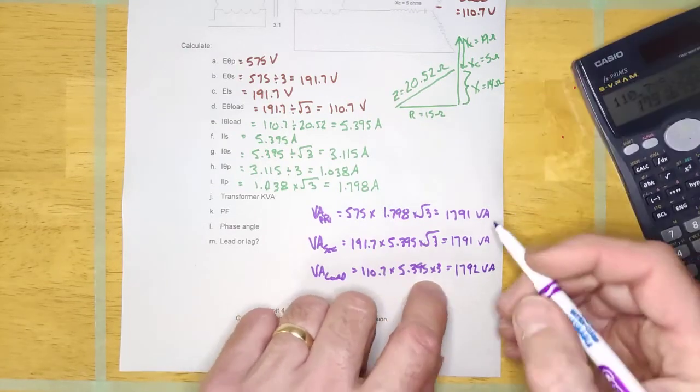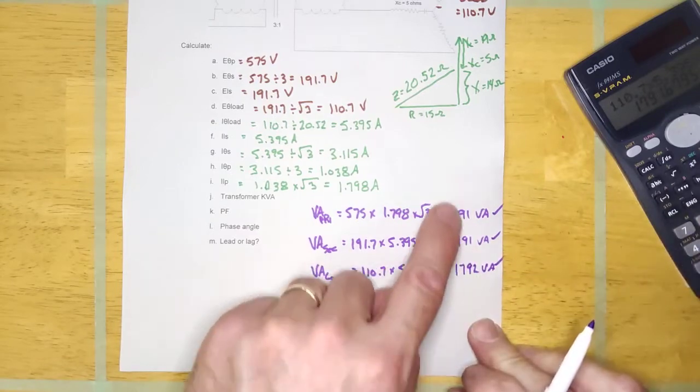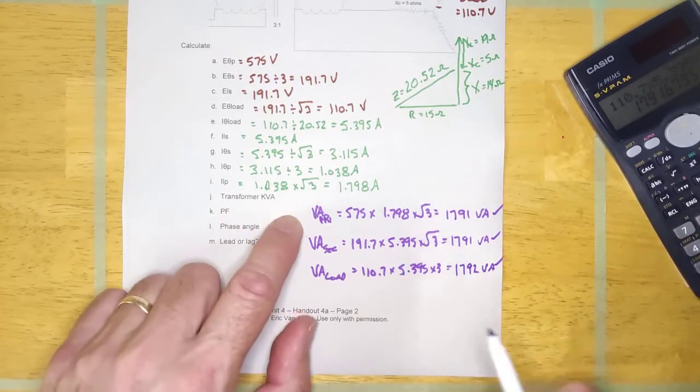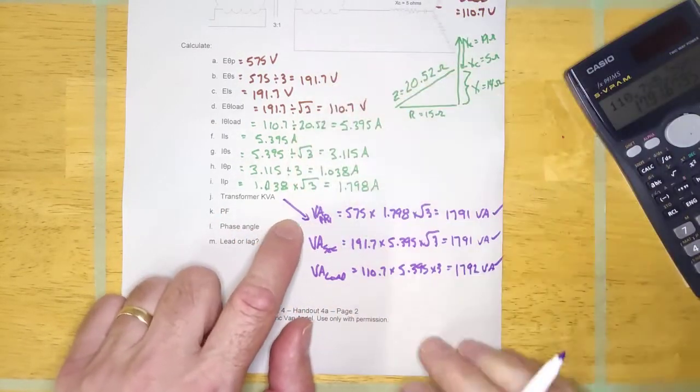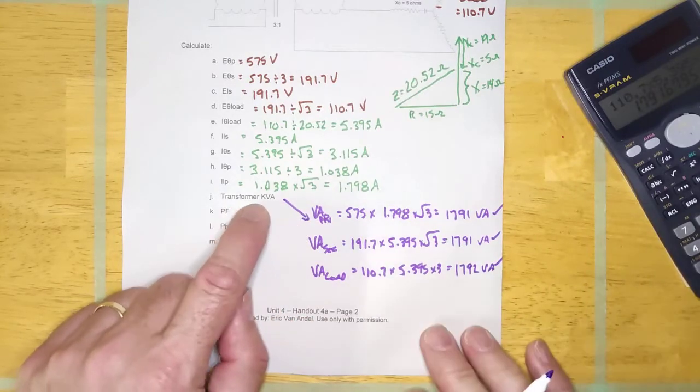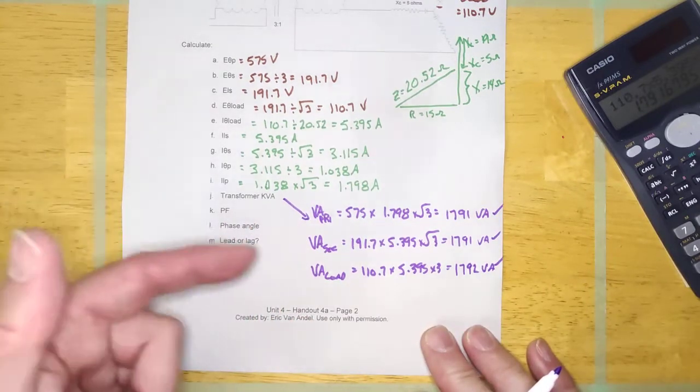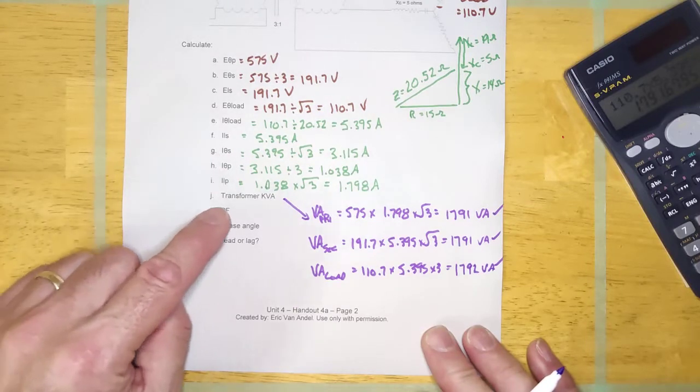Okay guys. And this is all working out perfectly. So, I am super happy with that one right there. And, like I said before, even if the question doesn't ask for the KVA, you better calculate it three times on every single question.